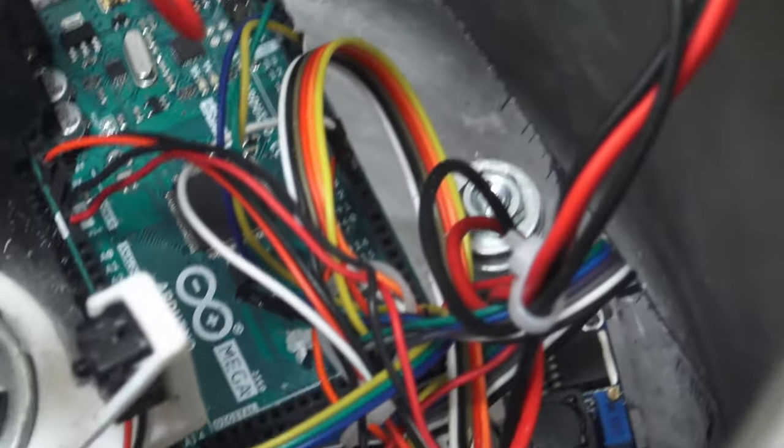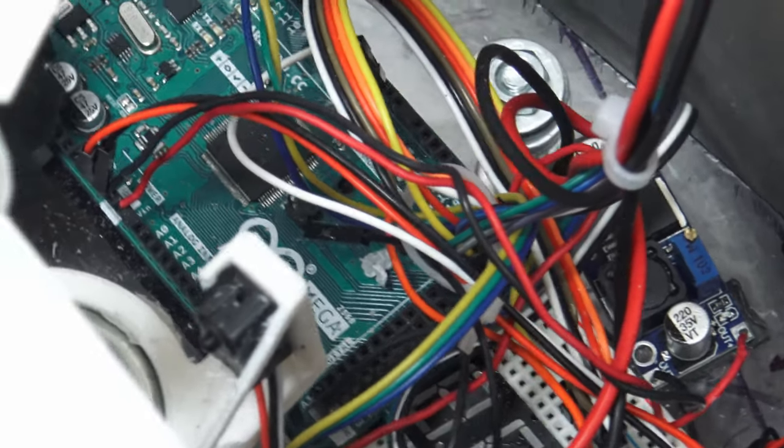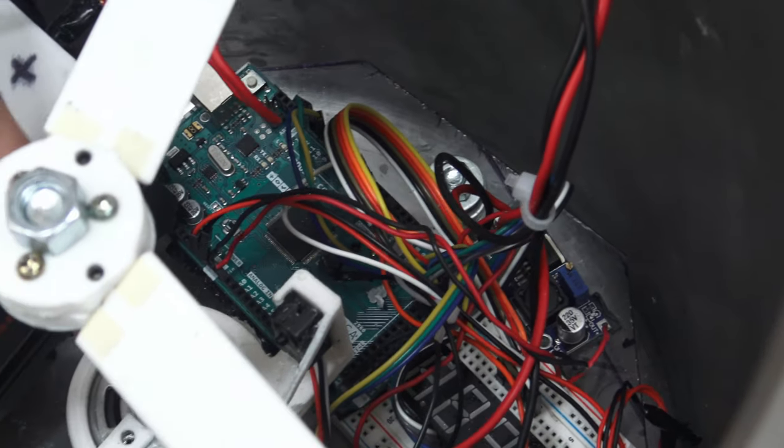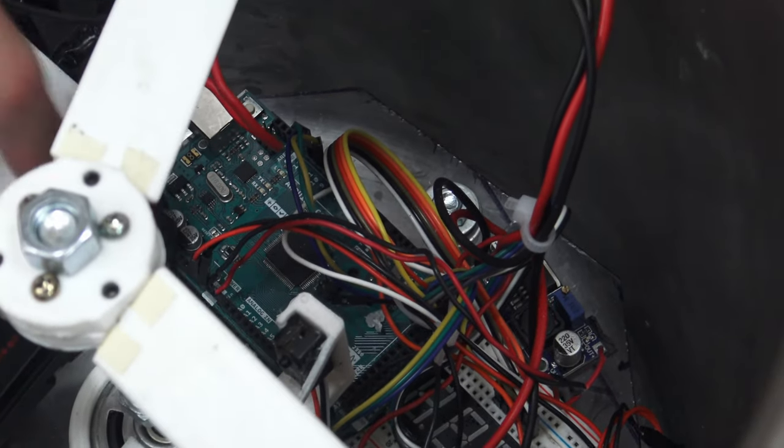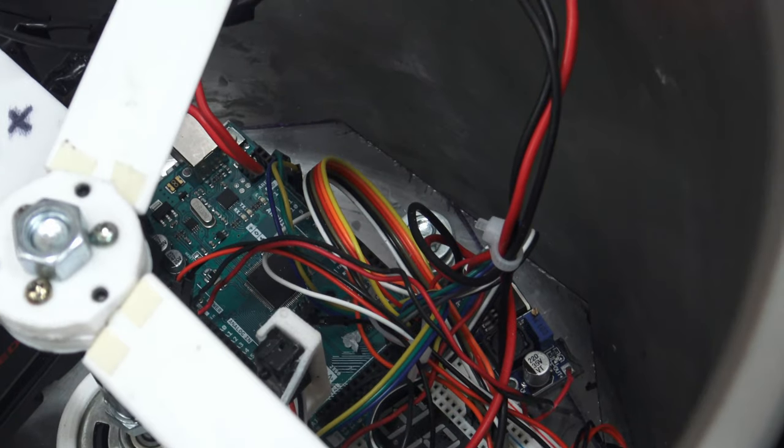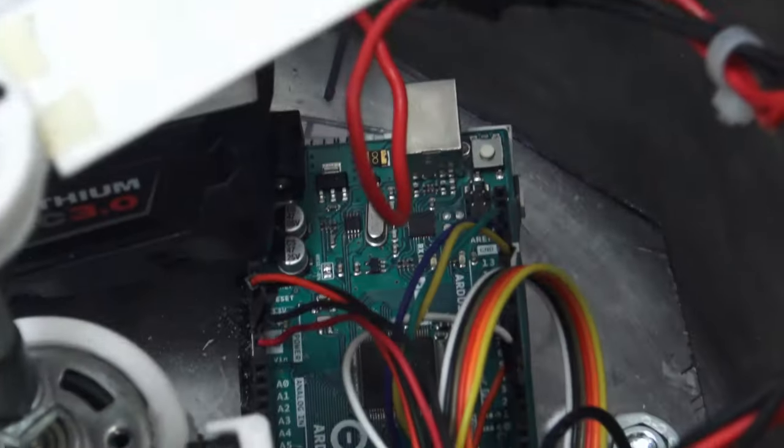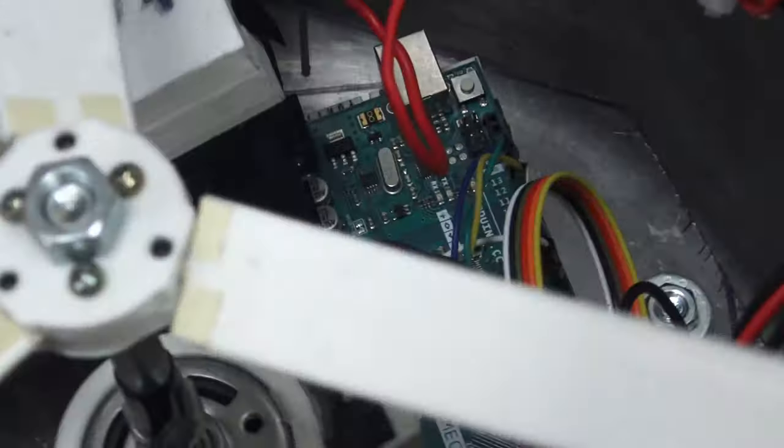And then this power goes into I believe that buck converter. And that buck converter essentially takes the 18 volts and then converts that maybe down to like 9 volts or something. That is a good voltage for both our motor and our Arduino so it wouldn't fry anything. And then the Arduino is again the brain of the whole setup.